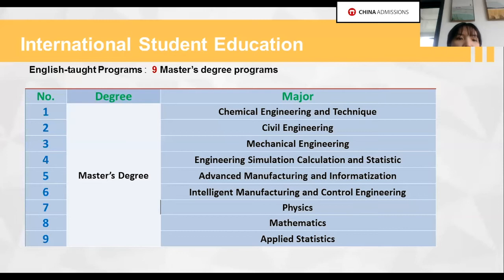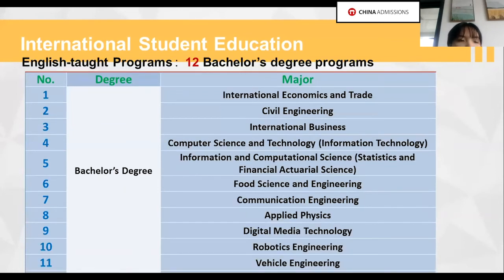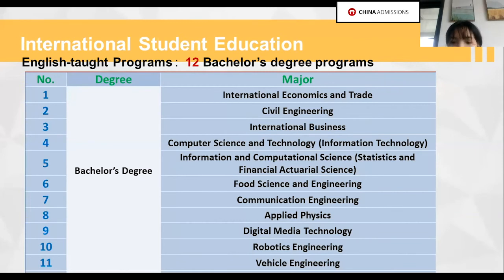We now offer nine master degree programs taught in English. We also offer 12 bachelor degree programs taught in English. I want to make a special mention about the last three: robotics engineering, vehicle engineering, and data science and big data technology — these are three new majors we offer this year, reflecting the booming industry worldwide. You are very welcome to join our programs.